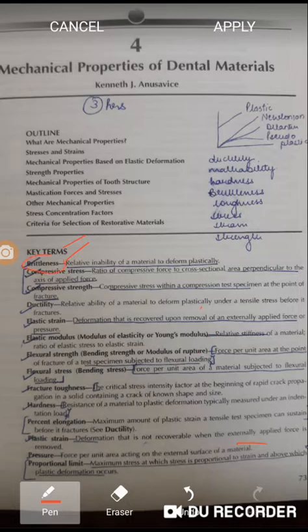Starting with brittleness - it is the relative inability of a material to deform plastically. Very much important. Then coming on to compressive stress - do give a reading to these definitions.